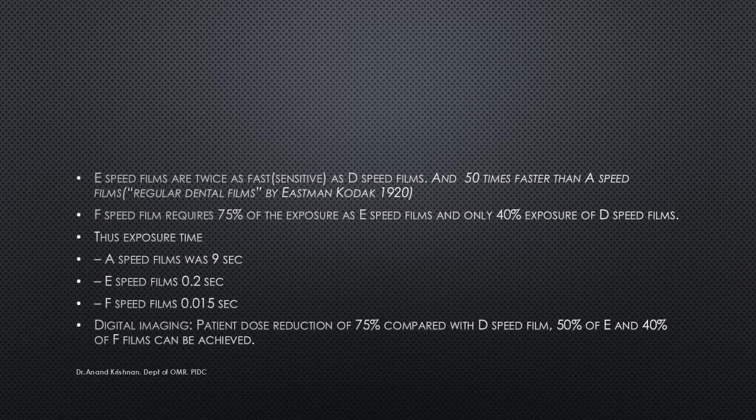Comparing films and digital imaging, digital radiography reduces patient dose by 75% compared to D-speed film, 50% compared to E-speed film, and 40% compared to F-speed film. This is why many opt for digital rather than upgrading further within film. With digital radiography there is no film processing — no need to separately buy processing chemicals, no dark room, no developing box, no disposal of processing solutions — all these concerns are eliminated.